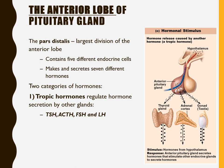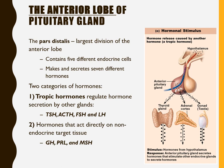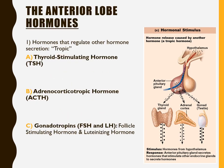The anterior lobe produces two types of hormones. The first group are tropic hormones, meaning they regulate hormone secretion of other glands. These include TSH, ACTH, FSH, and LH — four of the seven hormones. The second group acts directly on target non-endocrine tissues, and includes GH, PRL, and MSH.